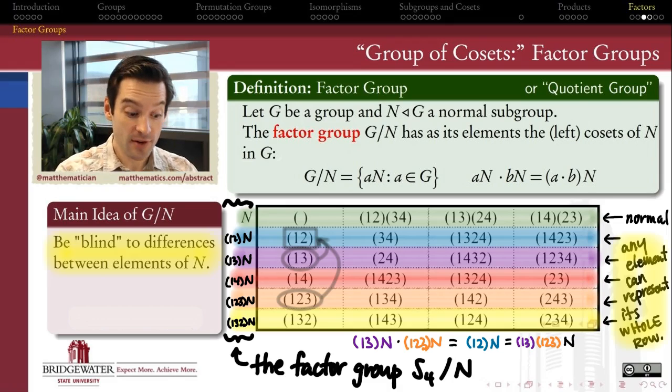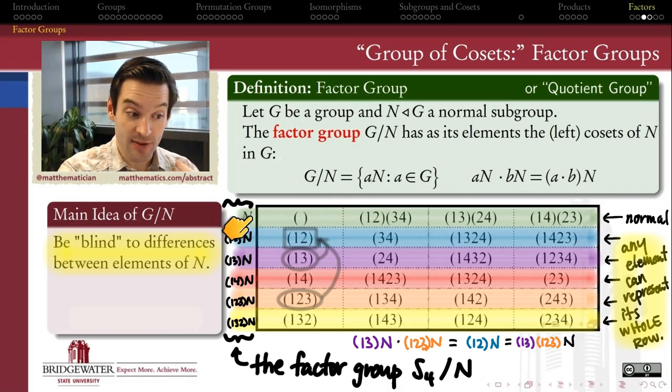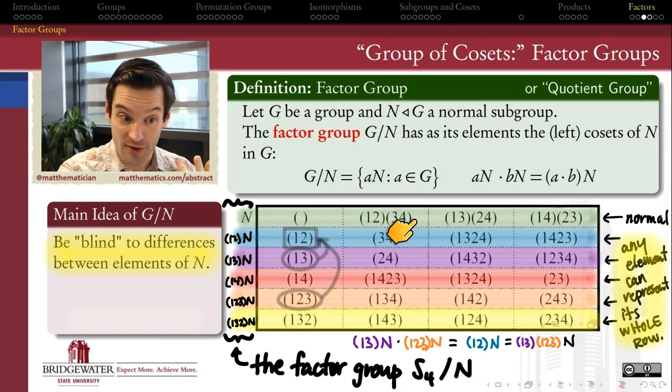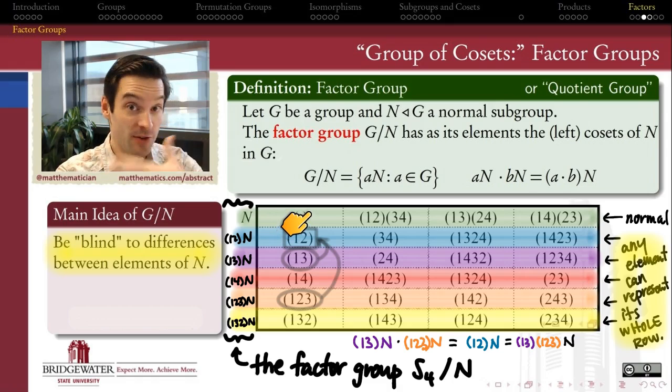And again, the purpose that that serves is it serves the purpose to blind us to any differences between the elements of N. So in the factor group, everything which belonged to N acts in the same way as one another. It just becomes the element N inside of my factor group. But that means that any differences between these 2 plus 2 cycles in this example, and the identity element, those differences are all blurred. We can't see them.